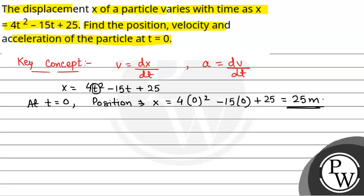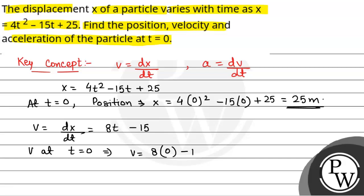Now, velocity is given by dx by dt. So x is equal to 4t squared minus 15t plus 25, so dx by dt is equal to 8t minus 15. Velocity at t is equal to 0 will be v is equal to 8 into 0 minus 15, so that will be minus 15 meters per second.